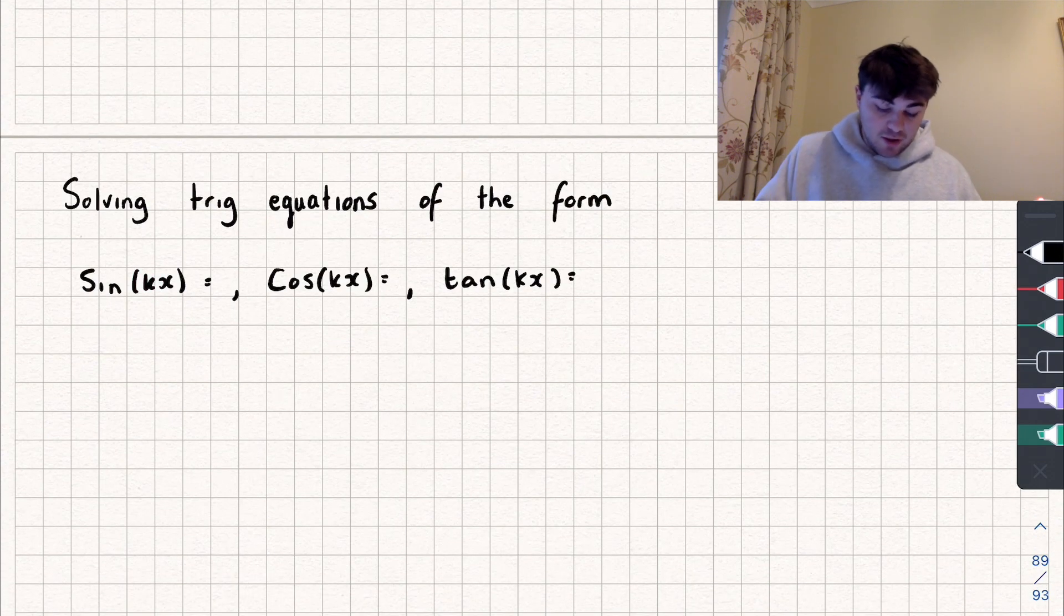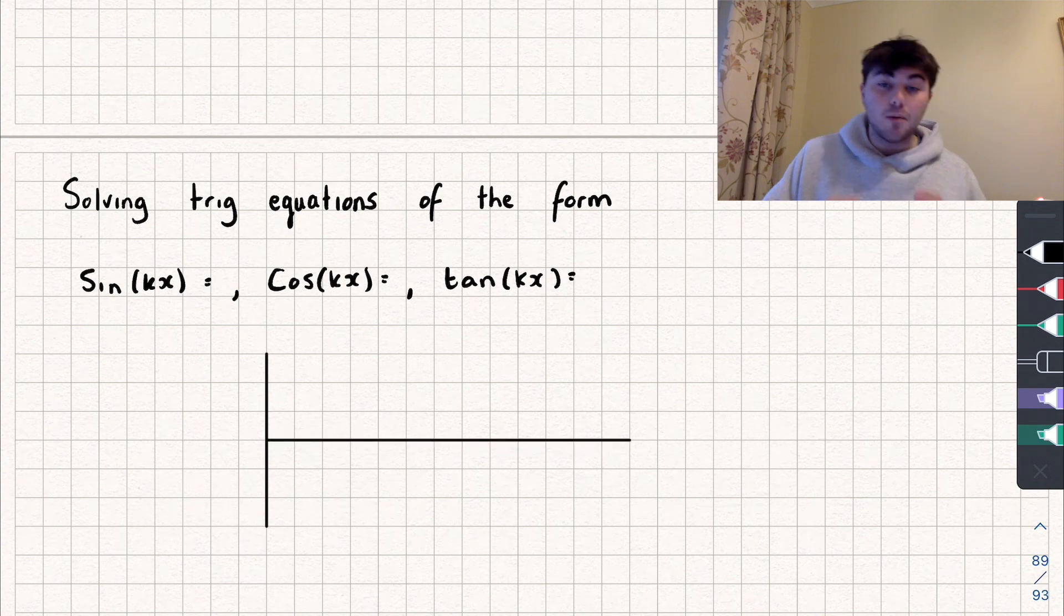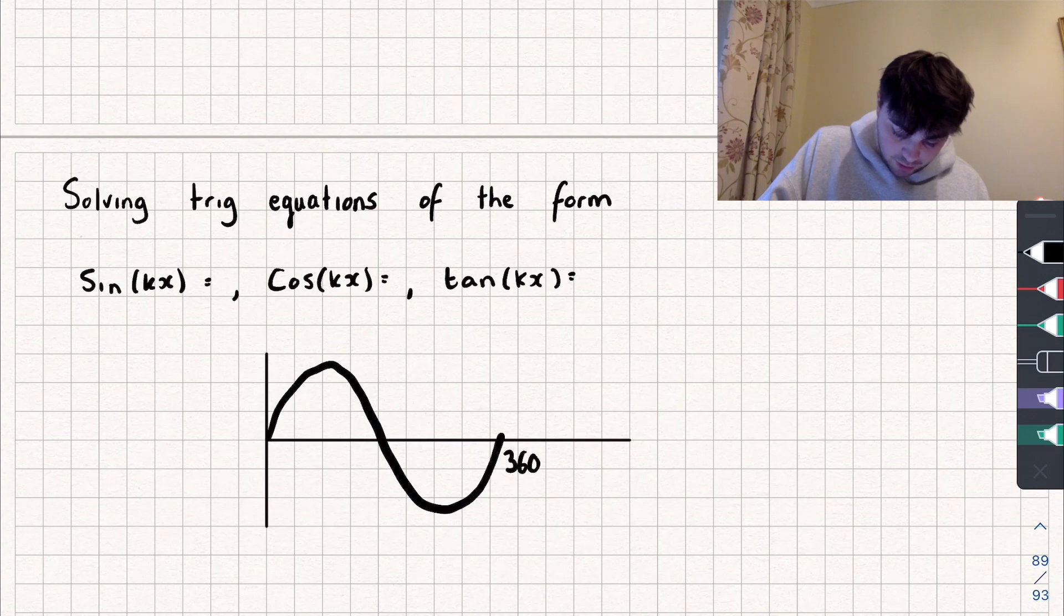And to demonstrate this, let's draw a sketch of a graph. So I'll draw sine of x between 0 and 360 degrees. And that's going to look something like this. So we've got 360 degrees and 0 degrees. And this is y equals sine of x.